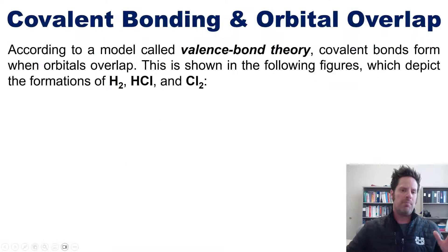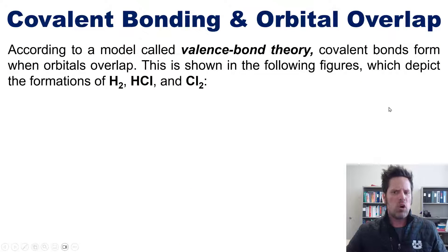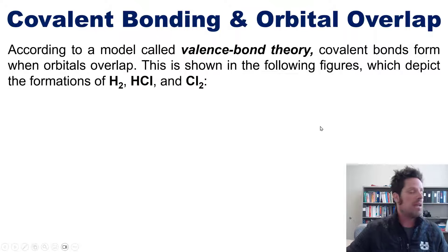Let's begin. So, according to a model called valence bond theory, covalent bonds form when orbitals overlap. This is shown in the following figures which depict the formations of H2, HCl, and Cl2.